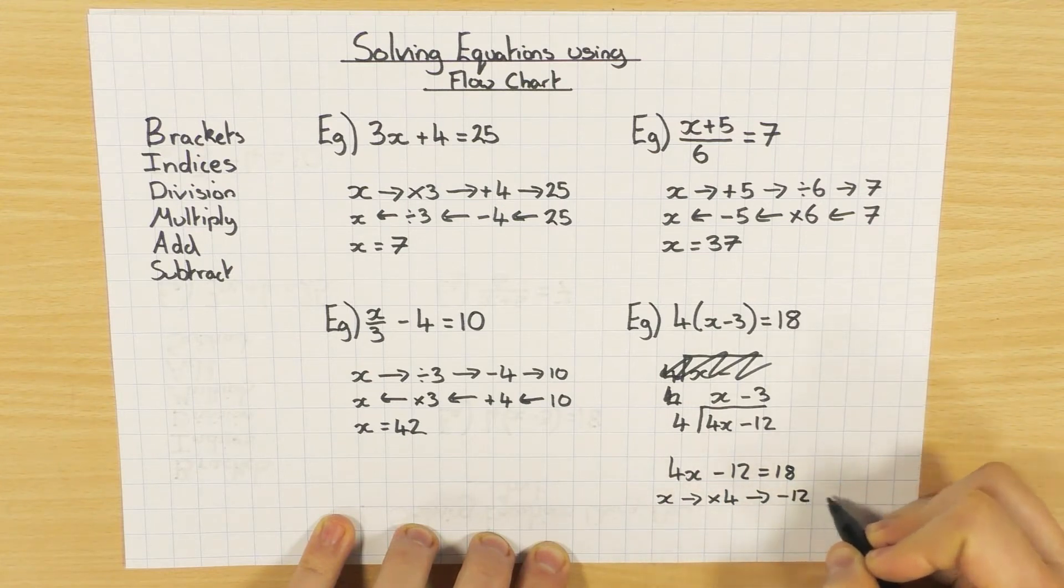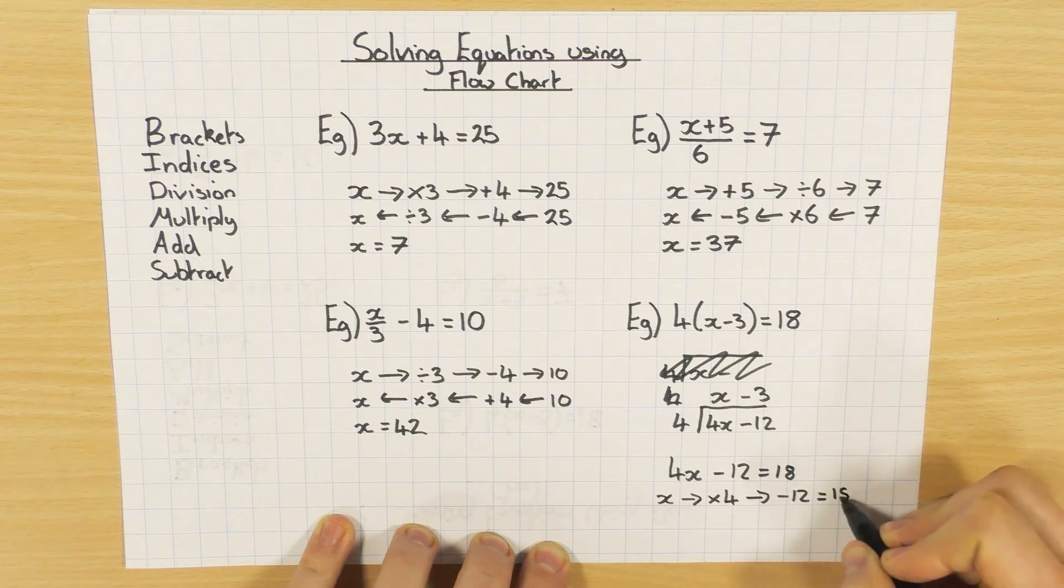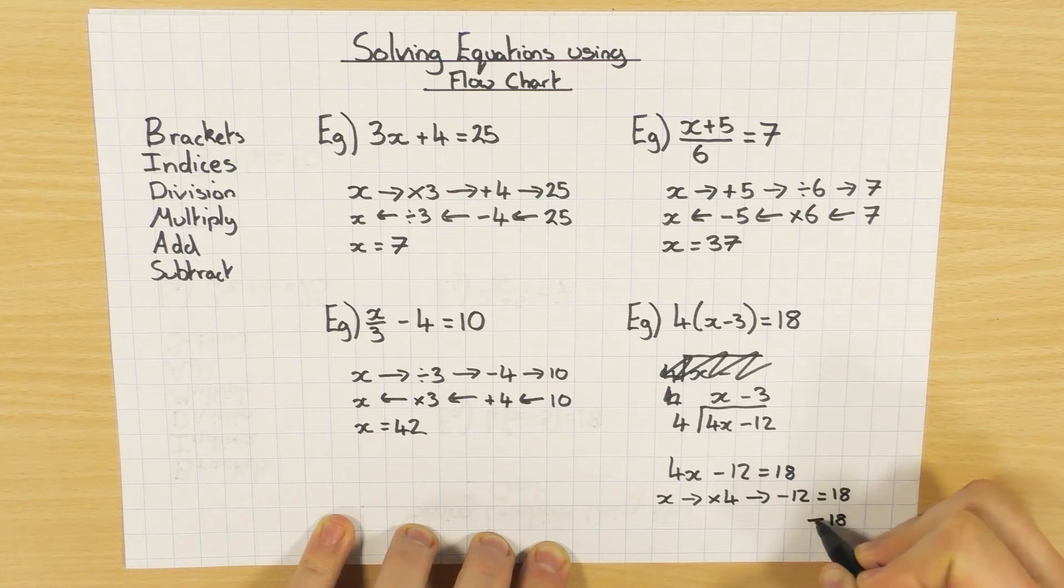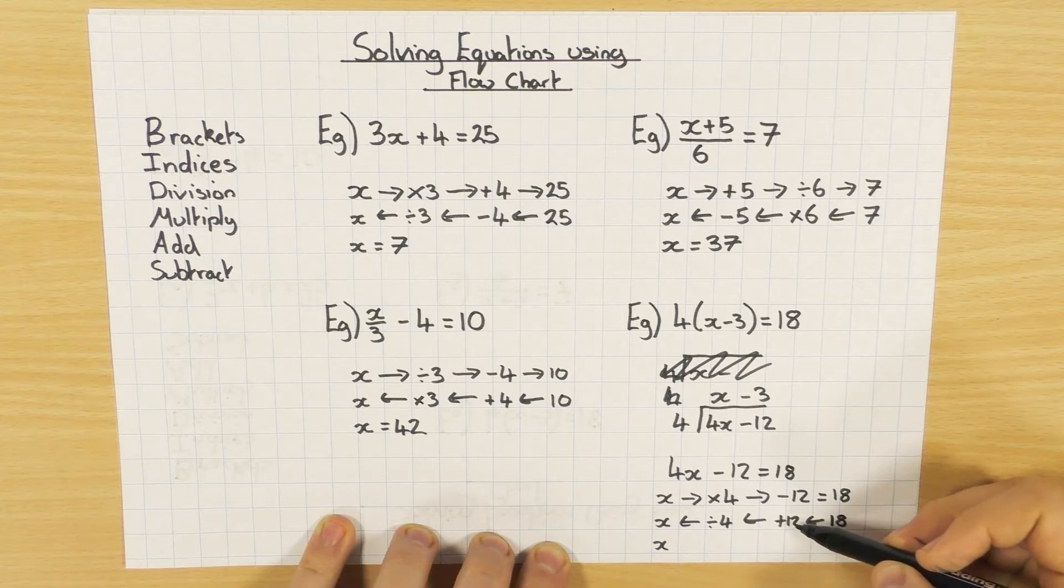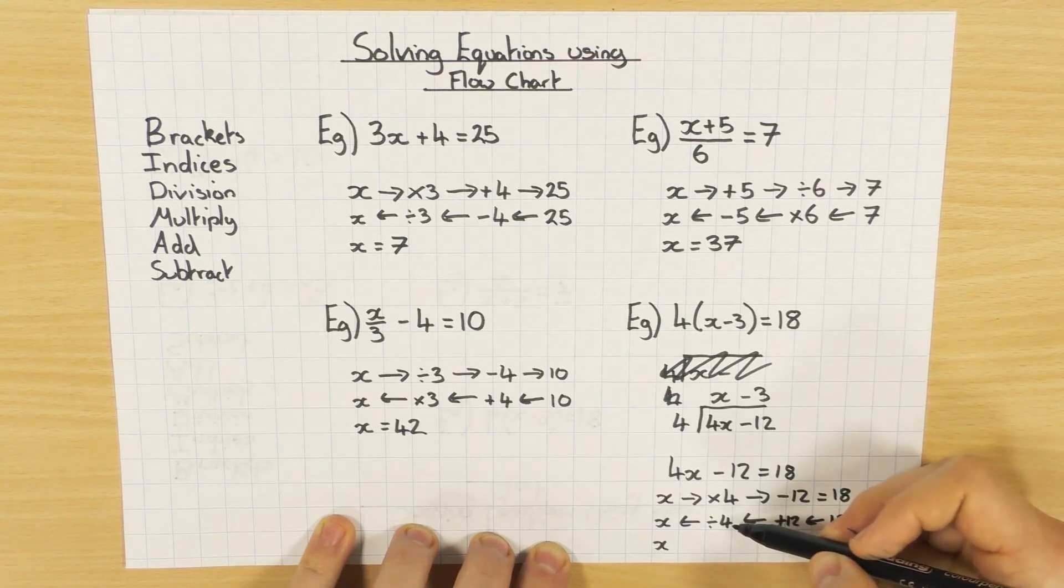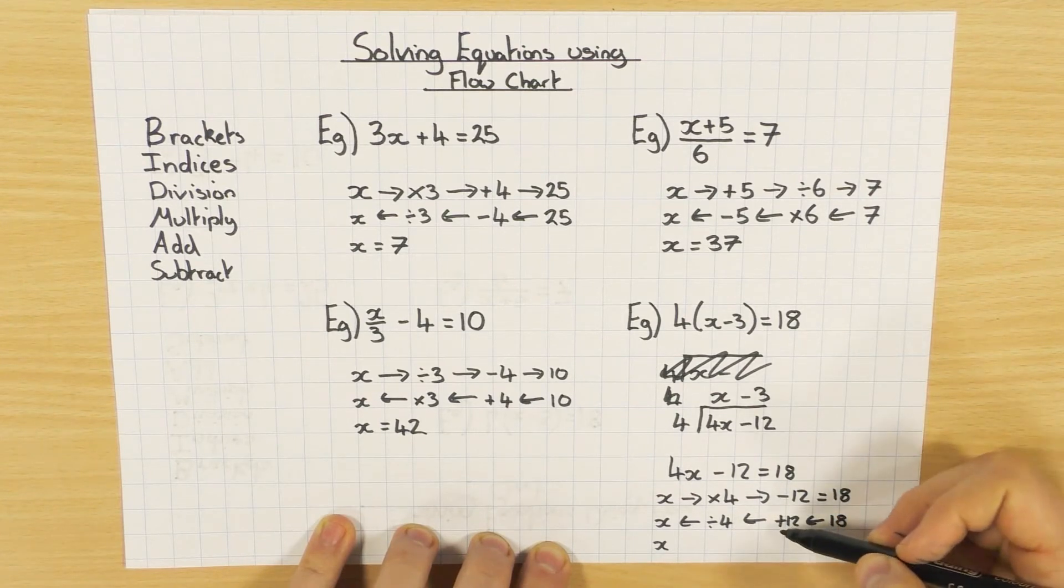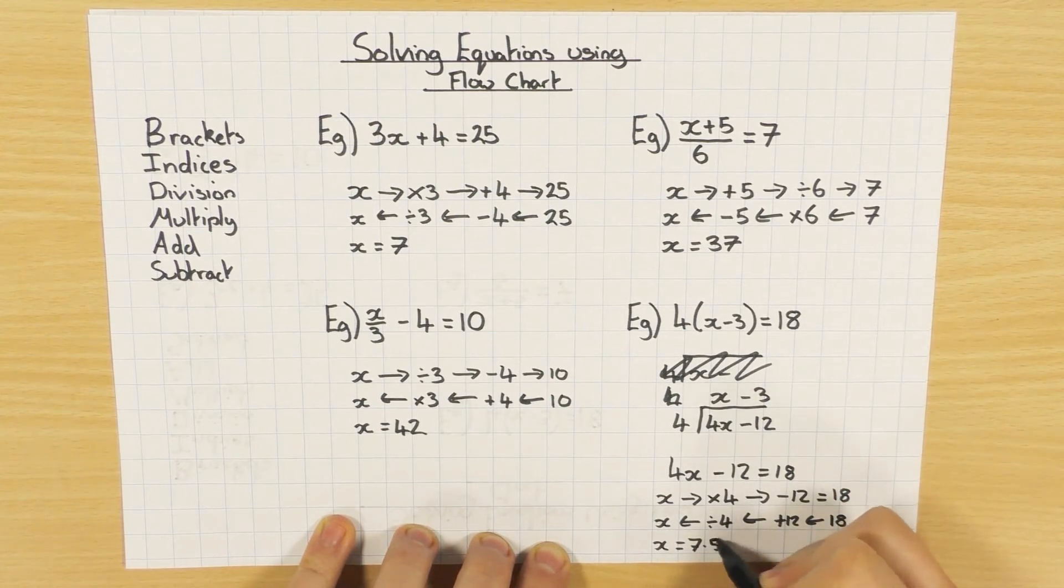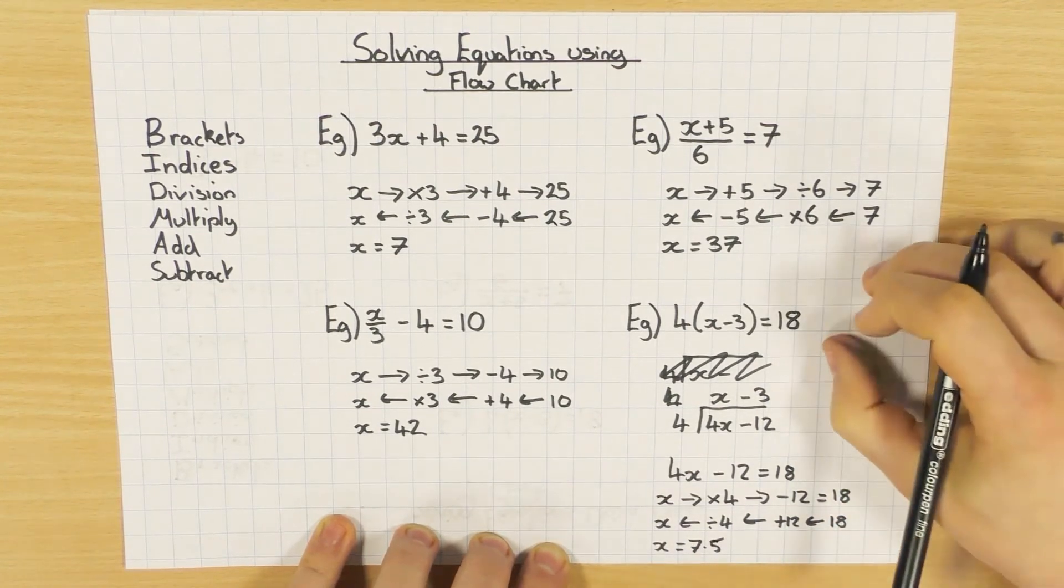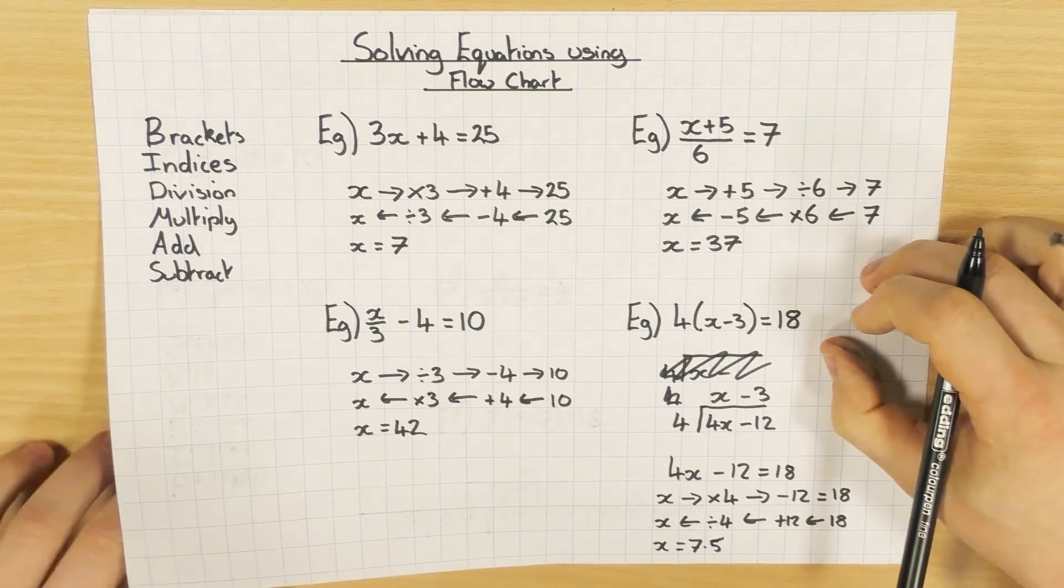And then it's exactly the same type of question I had at the start. So x times by 4, take away 12, equals 18. So go backwards, plus 12, divide by 4, and we get x. So 18 plus 12 is 30, then divide by 4, so half it and half it again. So half of 30 is 15, half of 15 is 7.5. So there's those examples.